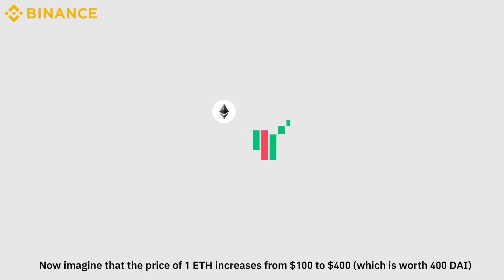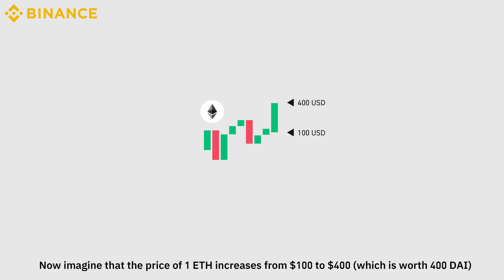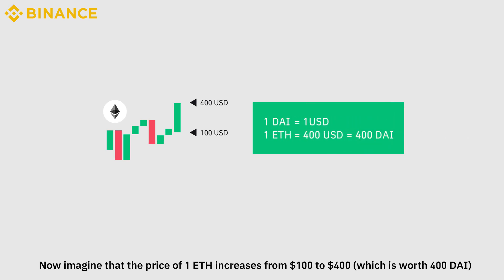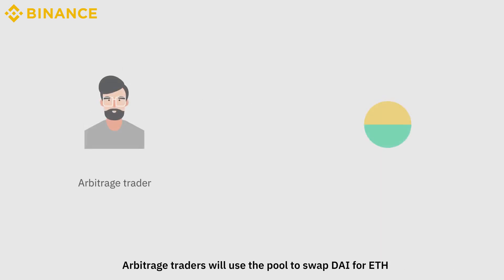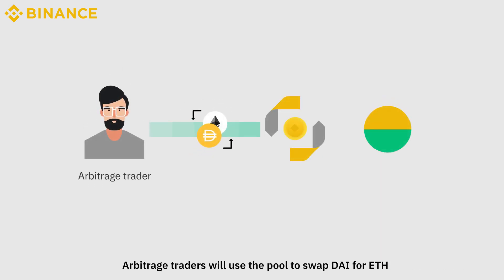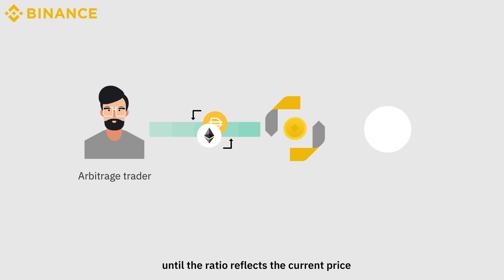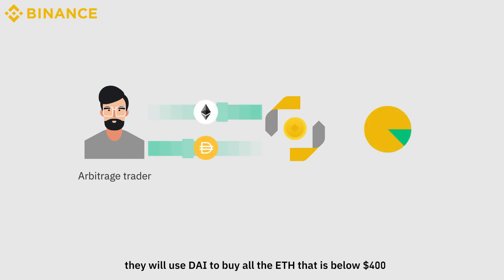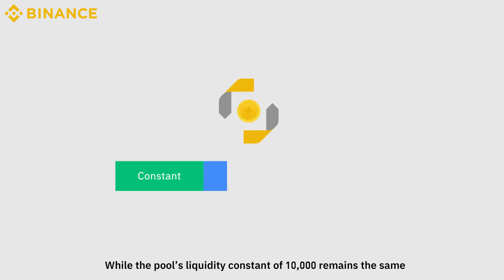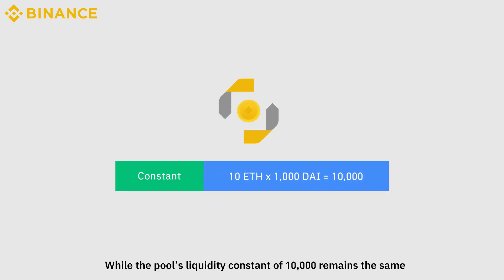Now imagine that the price of 1 ETH increases from $100 to $400, which is worth 400 DAI. Arbitrage traders will use the pool to swap DAI for ETH until the ratio reflects the current price — in other words, they will use DAI to buy all the ETH that is below $400. While the pool's liquidity constant of 10,000 remains the same, the ratio of the assets changes.